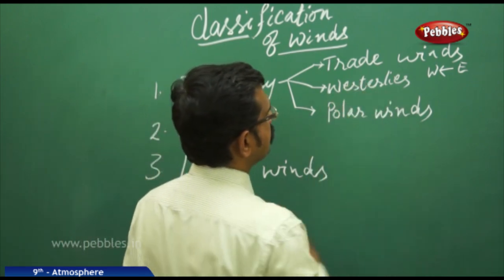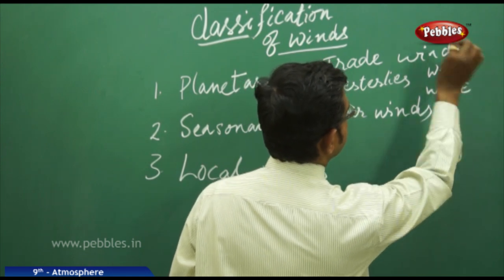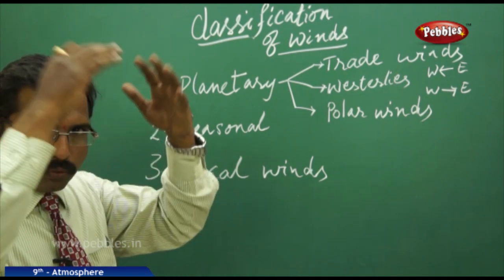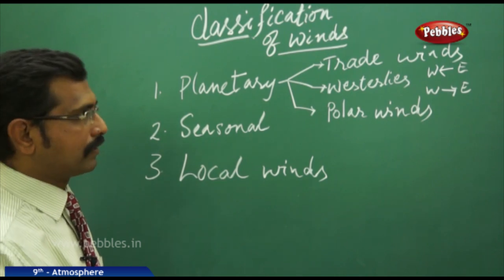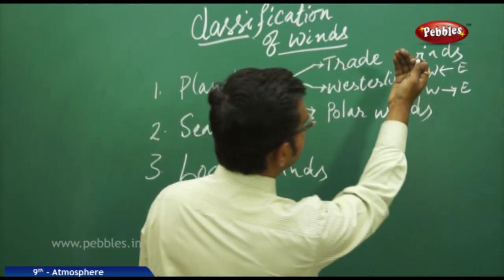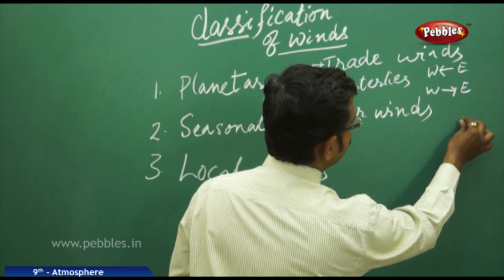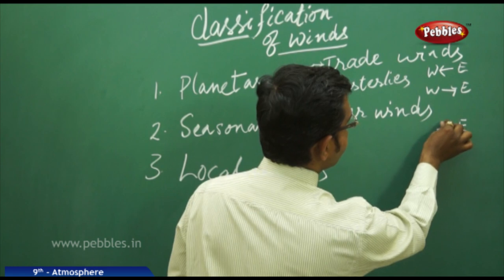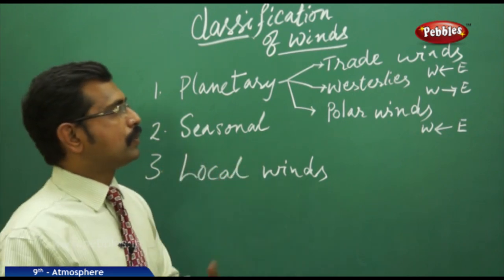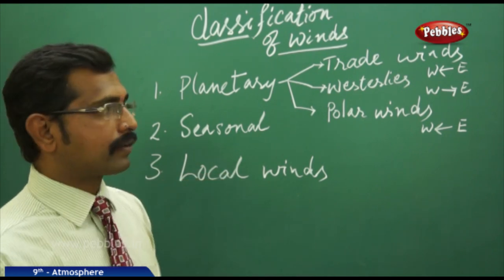Westerlies travel from west to east. These are the types of winds that travel above the earth with yearly climatic conditions. Polar winds are like trade winds—they also travel from east to west. These winds you generally find in the polar regions.